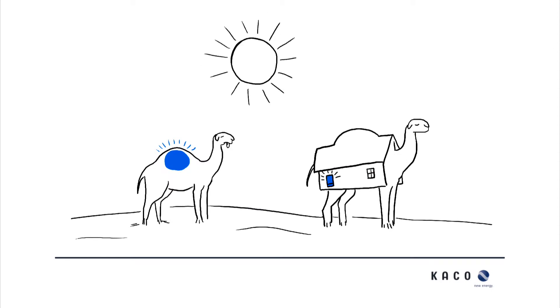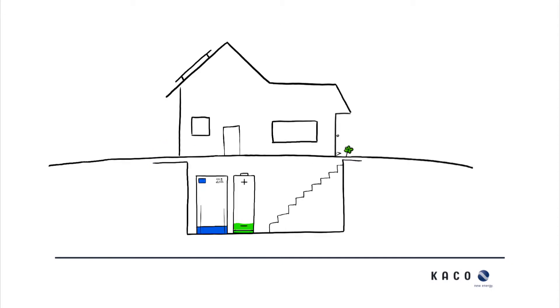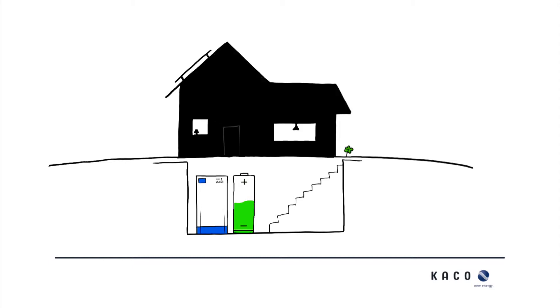Just like a camel, which stores and manages its energy itself. The system reliably stores and manages the electricity which your photovoltaic system generates and provides a continuous reduction in demand peaks.